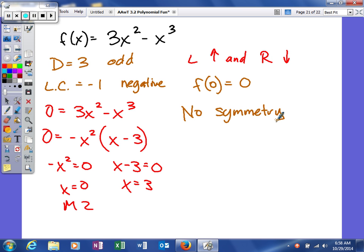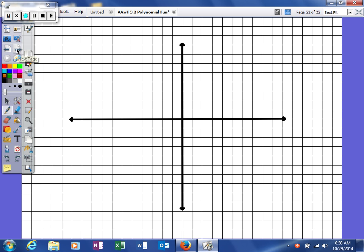All right, so we found those four things, and we're going to use those along with some other points to try to help us out. So our zeros are zero and three. Zero and positive three. One, two, three.